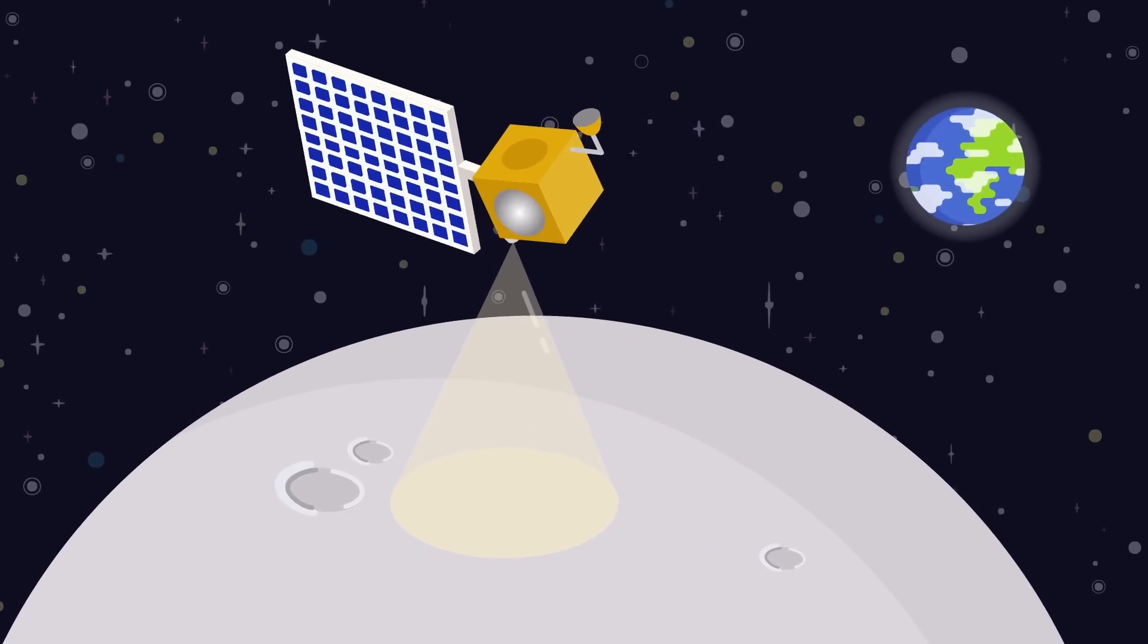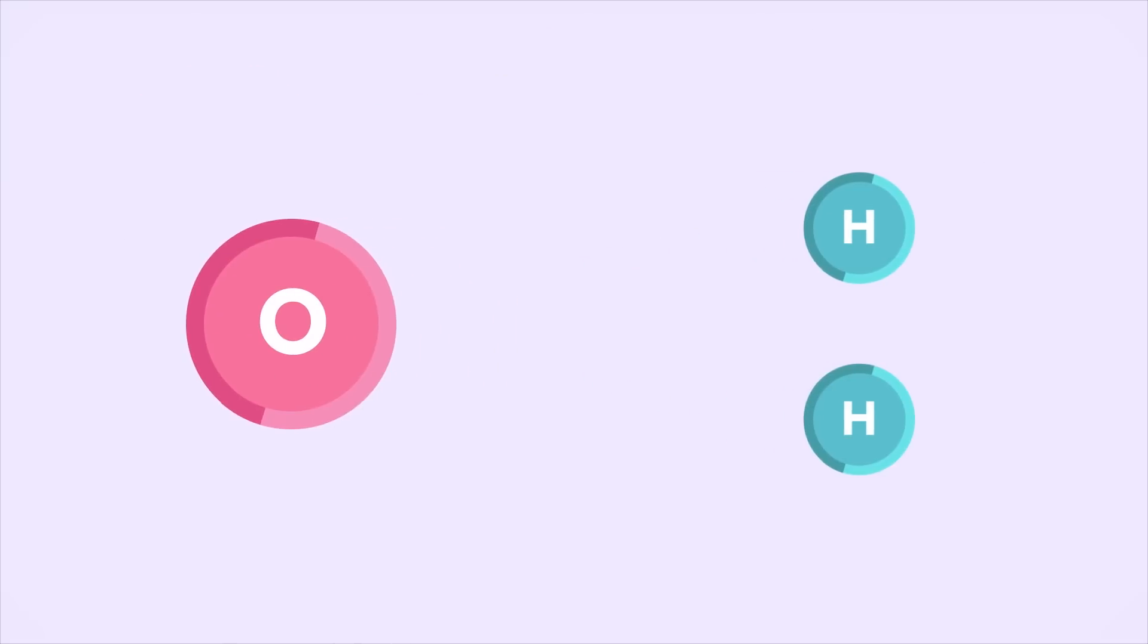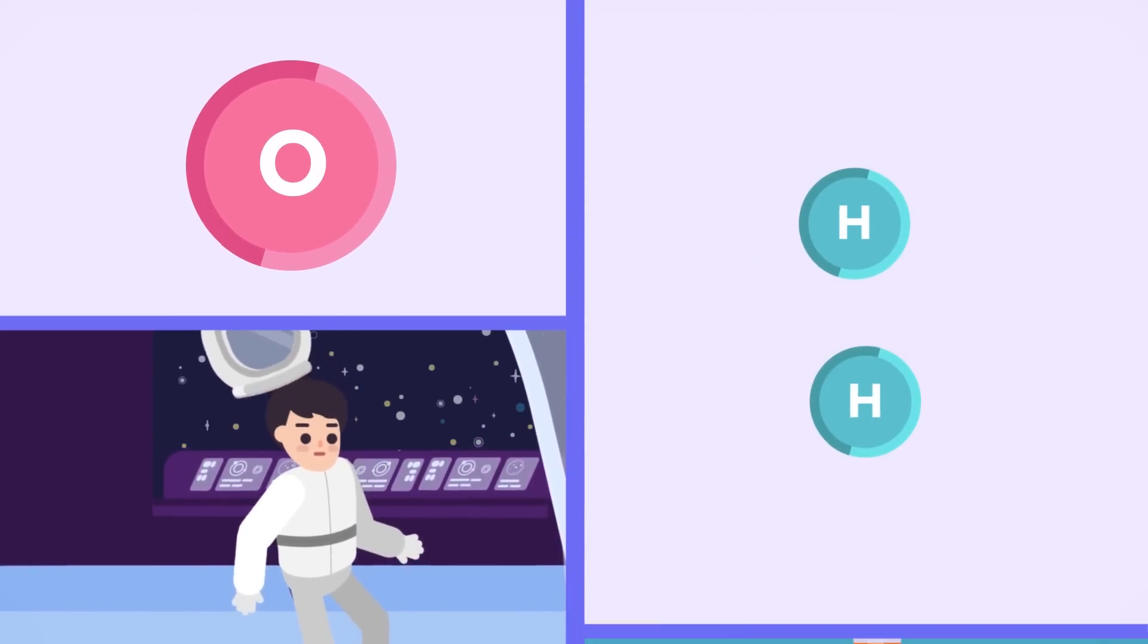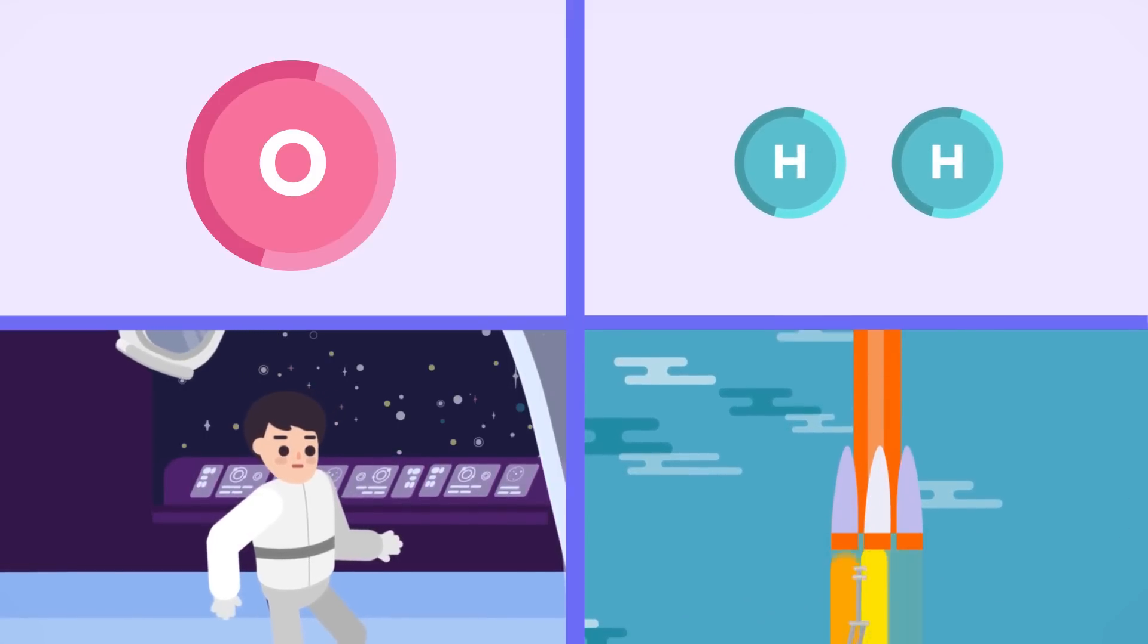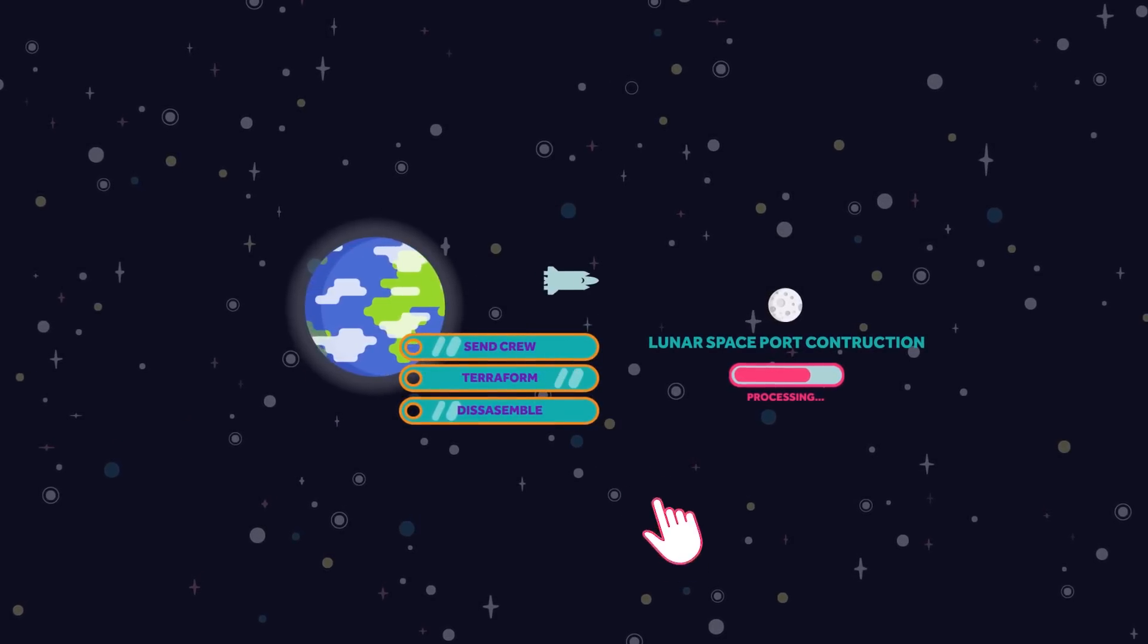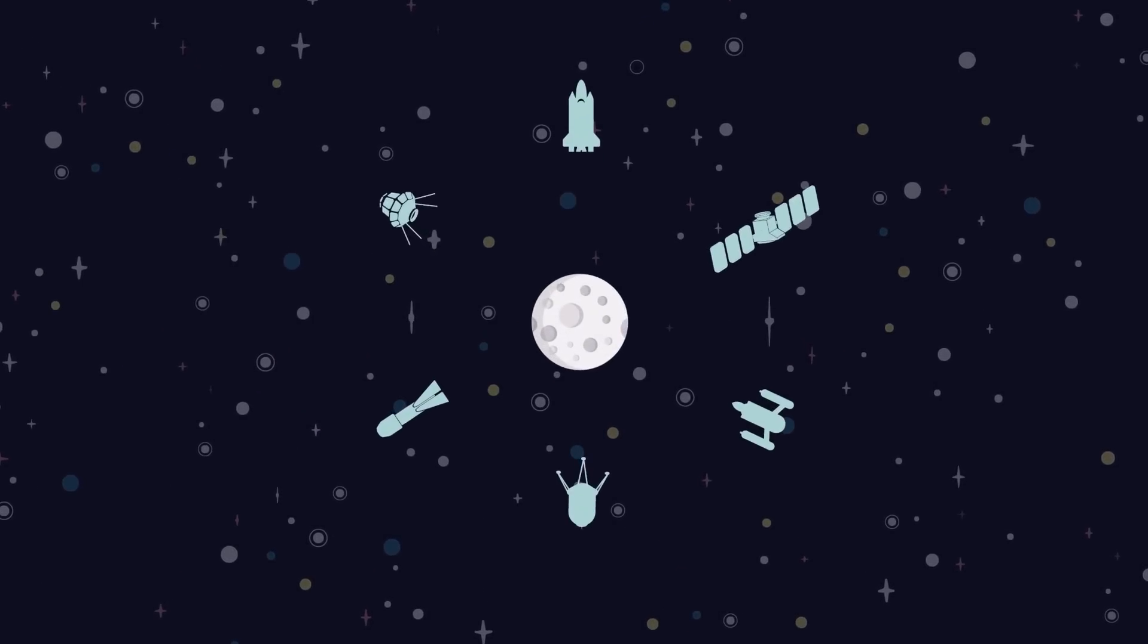Previous missions have even found frozen water on the moon, which we can easily split into oxygen, to use as breathing air for our future crew members, and hydrogen to use as a powerful fuel. All in all, the moon hides great potential to serve as an airport, as a station from which we could expand beyond our imagination.